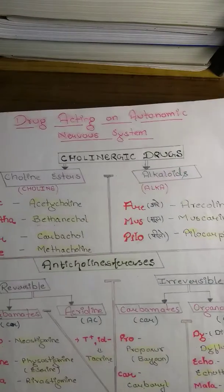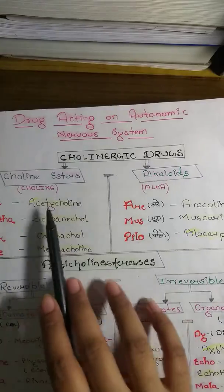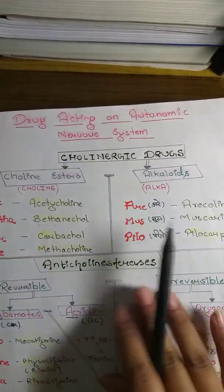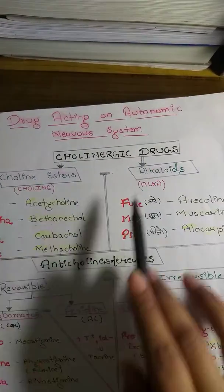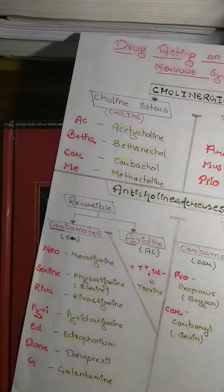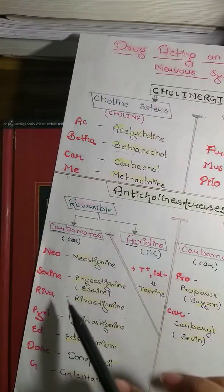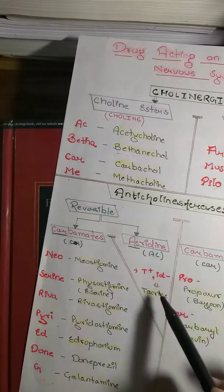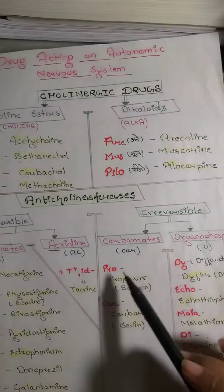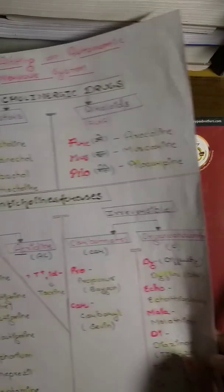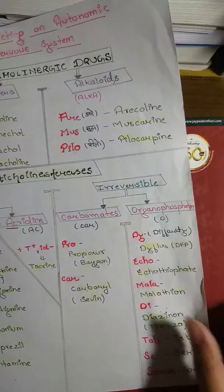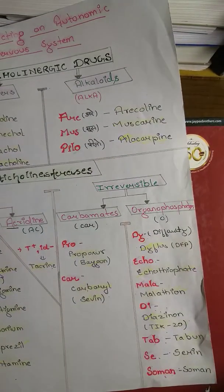Quick recap: Cholinergic drugs are divided into choline esters and alkaloids — Arecoline, Muscarine, Pilocarpine. Anticholinesterases: reversible — Neostigmine, Rivastigmine, Pyridostigmine, Edrophonium, Donepezil, Galantamine; Acridine → Tacrine (T+, ID−); Carbamates → Propoxur, Carbaryl; Organophosphates — Dyflos, Ecothiopate, Malathion, Diazinon, Tabun, Sarin, Soman.